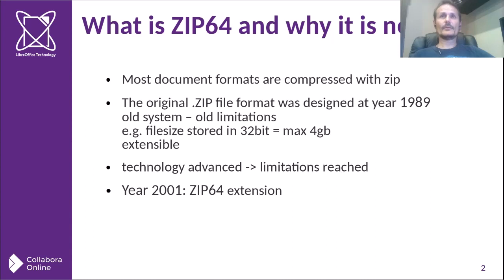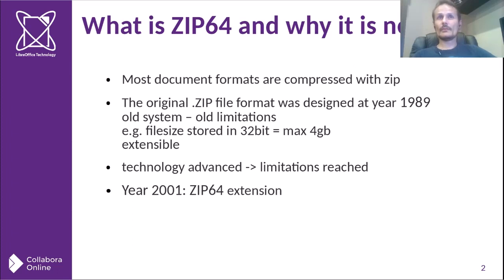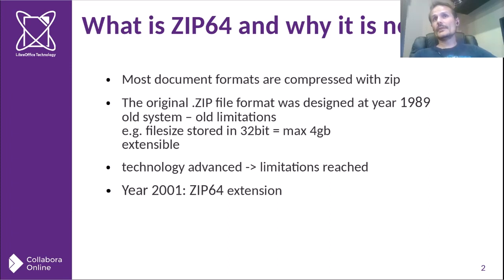First, what is ZIP64 and why is it needed? Most of our documents are compressed with ZIP. The original ZIP format was designed long ago and, like every application, ZIP has limitations. For example, the file size was stored in 32 bits, meaning the biggest file it can compress is 4GB. It was totally fine at that time, as hard drives were smaller than 4GB, so storing file sizes in bigger variables would have been a waste of memory. But as technology advanced, it reached some of these limitations.